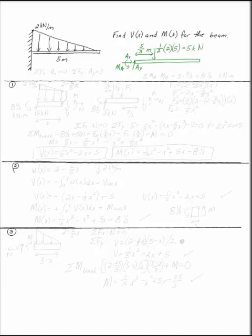When I take the sum of the forces in X, I get AX equals zero. When I take the sum of the forces in Y, I get AY equals five. And when I take the sum of the moments about point A, I get MA equals five times five thirds, or eight and a third kilonewton meters. Those are the reactions at the end — no matter what you do, that's always the first step.